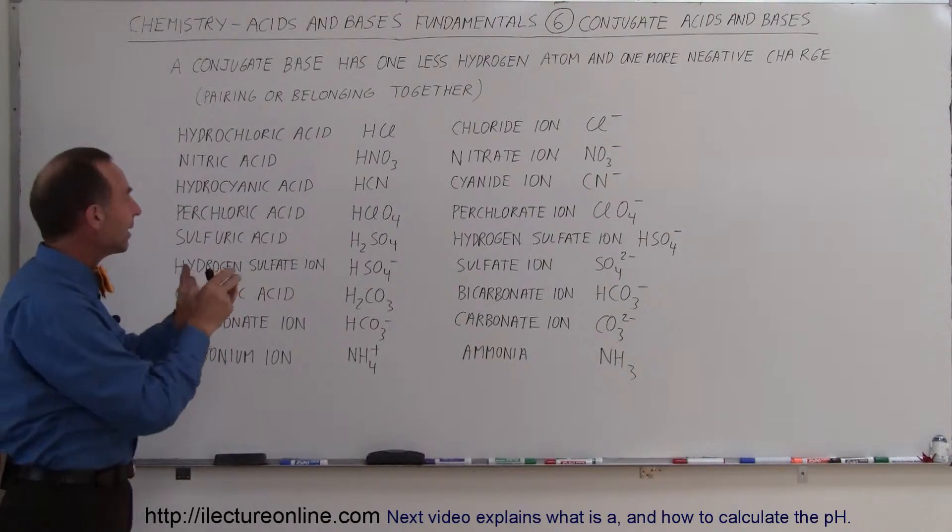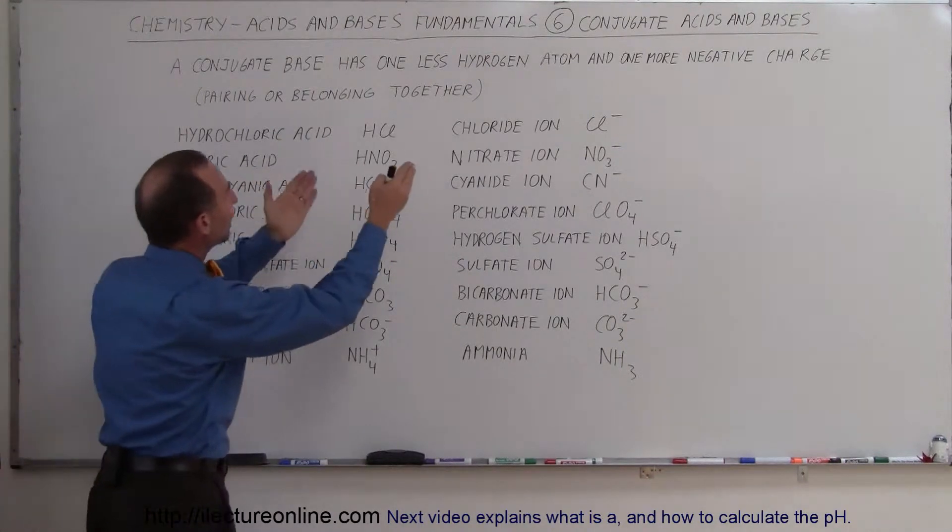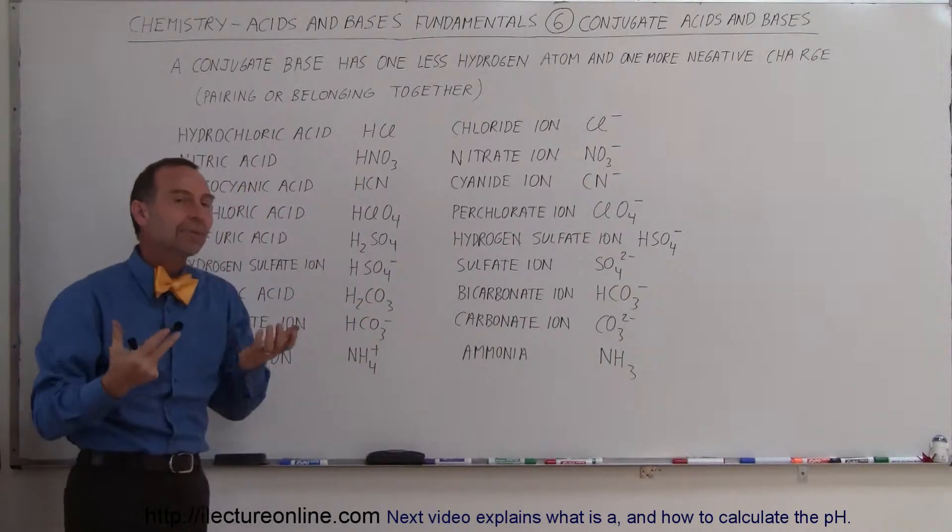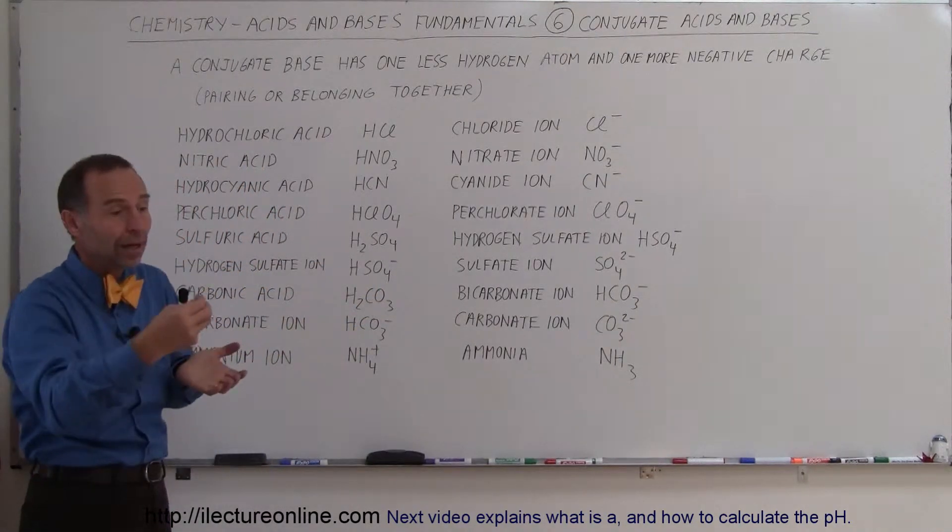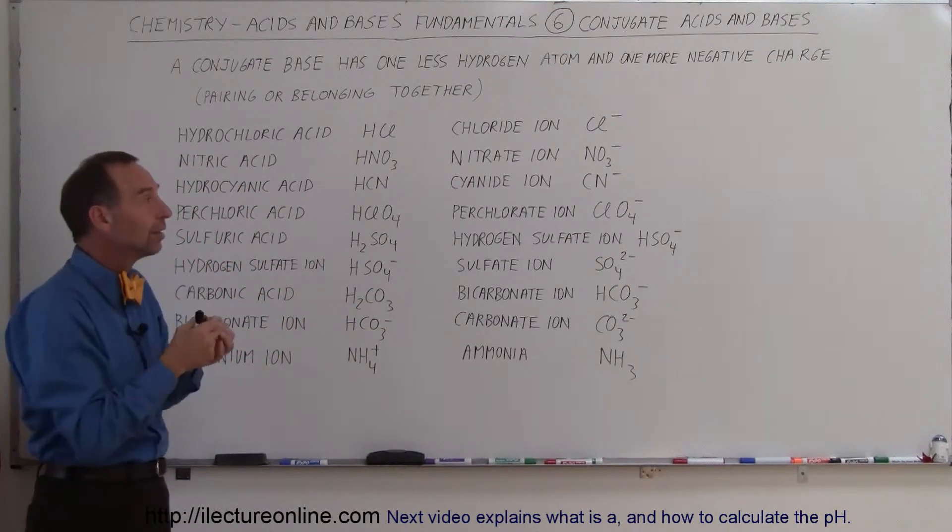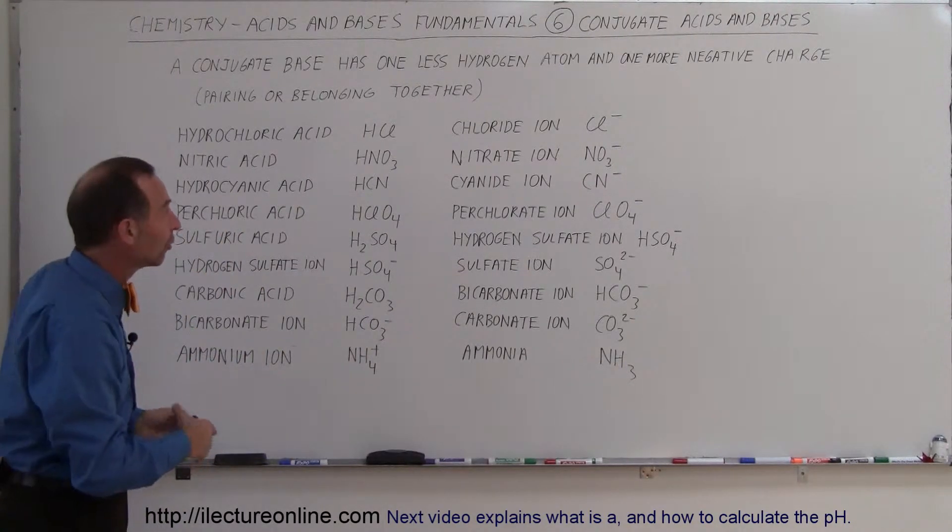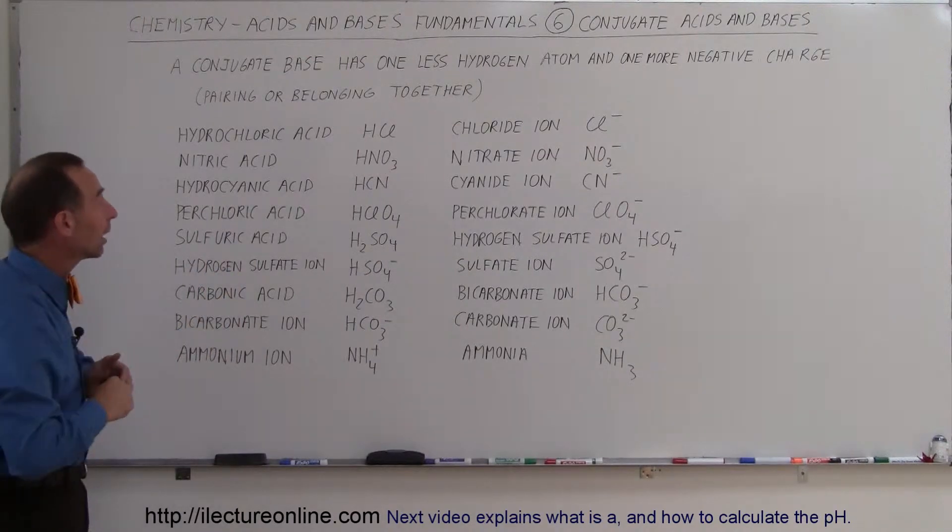Anyway, so when you take an acid, the conjugate base has one less hydrogen and one more negative charge. Of course, that's automatic because if you take a hydrogen atom away that has a positive charge with it, you then of course have one less positive charge, therefore one more negative charge. So let's take a look at this list and see what they look like.